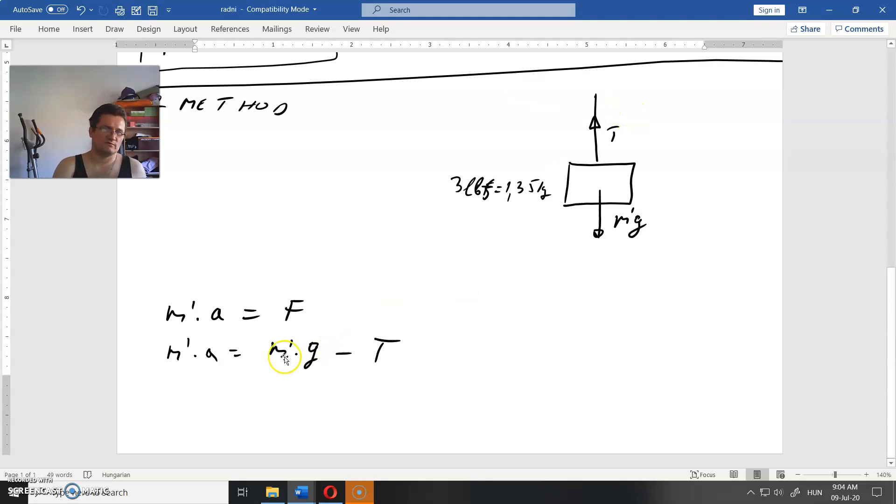This is the force that moves downwards, and this is what is holding it back. From this equation, T equals M prime G minus M prime A. So T equals M prime times G minus A.